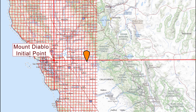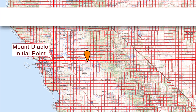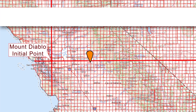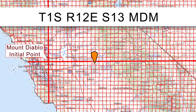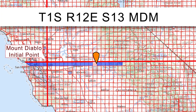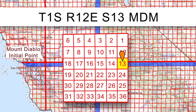So how do you describe a location using the public land survey system? To describe Section 13, you would write it as Township 1 South, Range 12 East, Section 13, MDM. Where 1 South is the first township line south of the initial point, 12 East is the range line east of the initial point, Section 13 is the 13th section within that township, and MDM is Mount Diablo Mountain — the name of the initial point. The name of the initial point is often left off since people are usually communicating to someone who has a general idea of where they are.